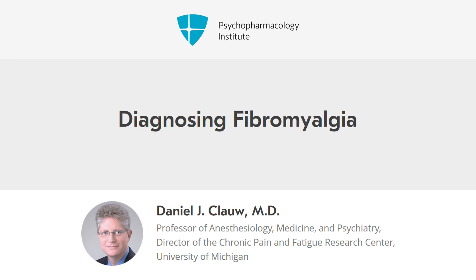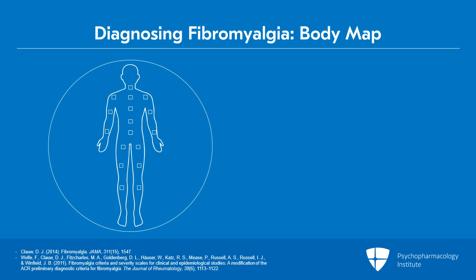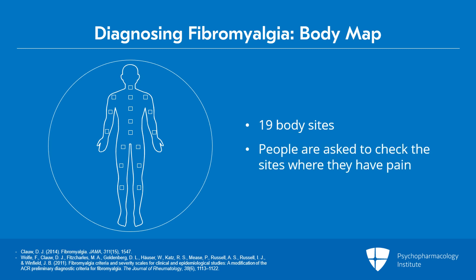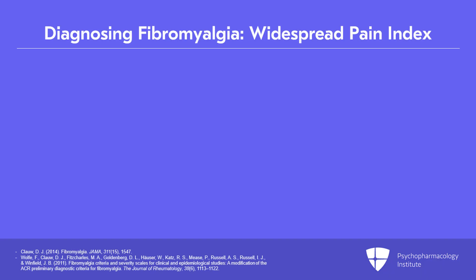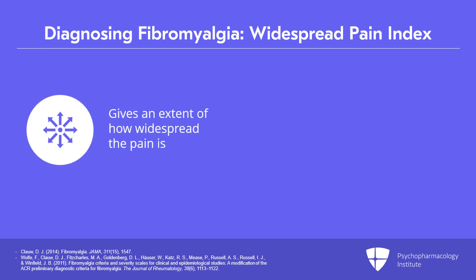The current fibromyalgia diagnostic criteria — you see on the left side a body map. There are 19 sites on this body map, and people are asked to check all the sites where they have pain. You add up from 0 to 19 how many sites people have pain in. This measure is called the Widespread Pain Index, and it gives you an extent of how widespread the pain is.